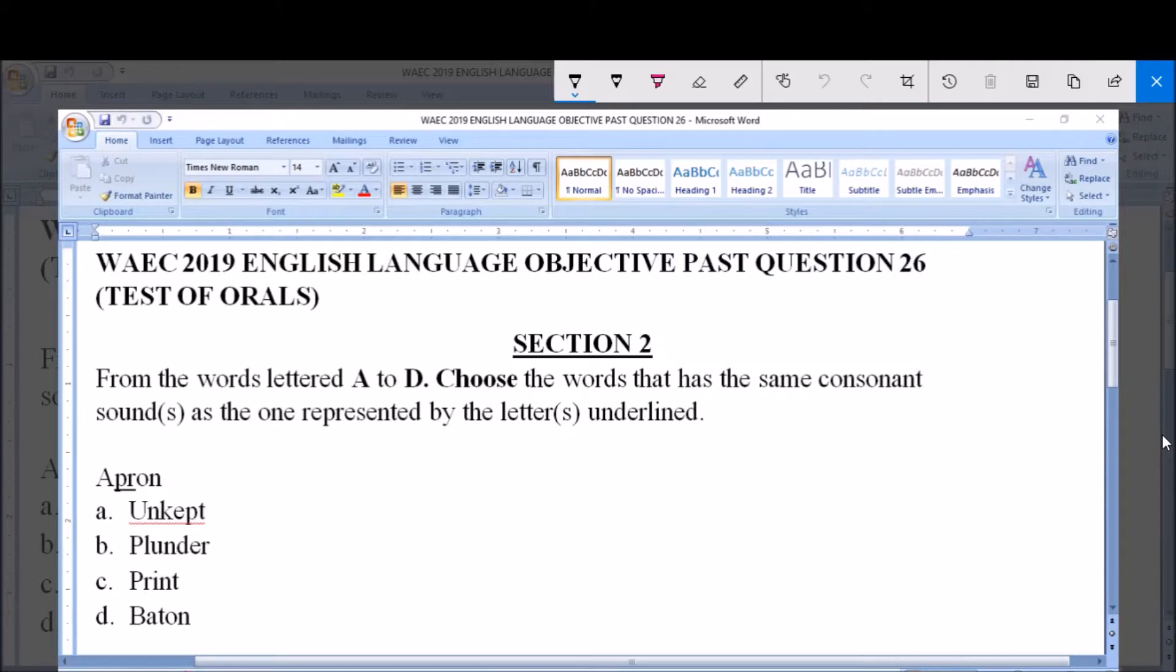The instruction is from the words lettered A to D, choose the words that has the same consonant sound or sounds as the one represented by the letter or letters underlined. The word given to us is apron and the letters underlined are P and R.